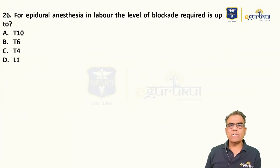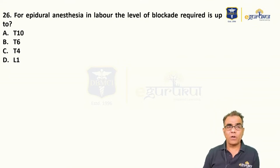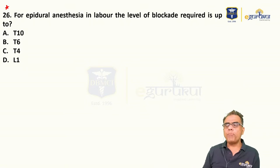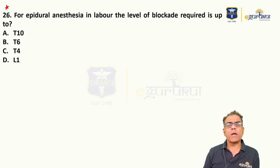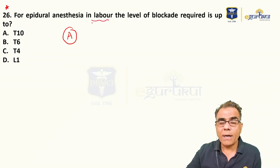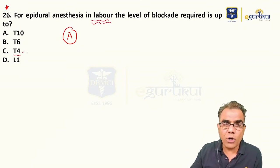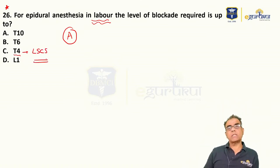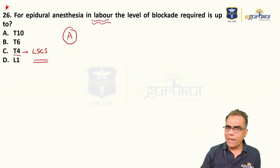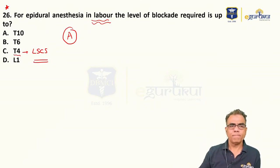Question twenty-six: For epidural anesthesia in labor, the level of block required is up to — T10, T6, T4, or L1? For painless labor we only need to block the nerve supply of the uterus, which is up to T10. So the level of block for labor is T10. However, for cesarean section the level needs to be up to T4, because the gut and peritoneum — supplied up to T4 — are also handled. Answer: T10 for labor.